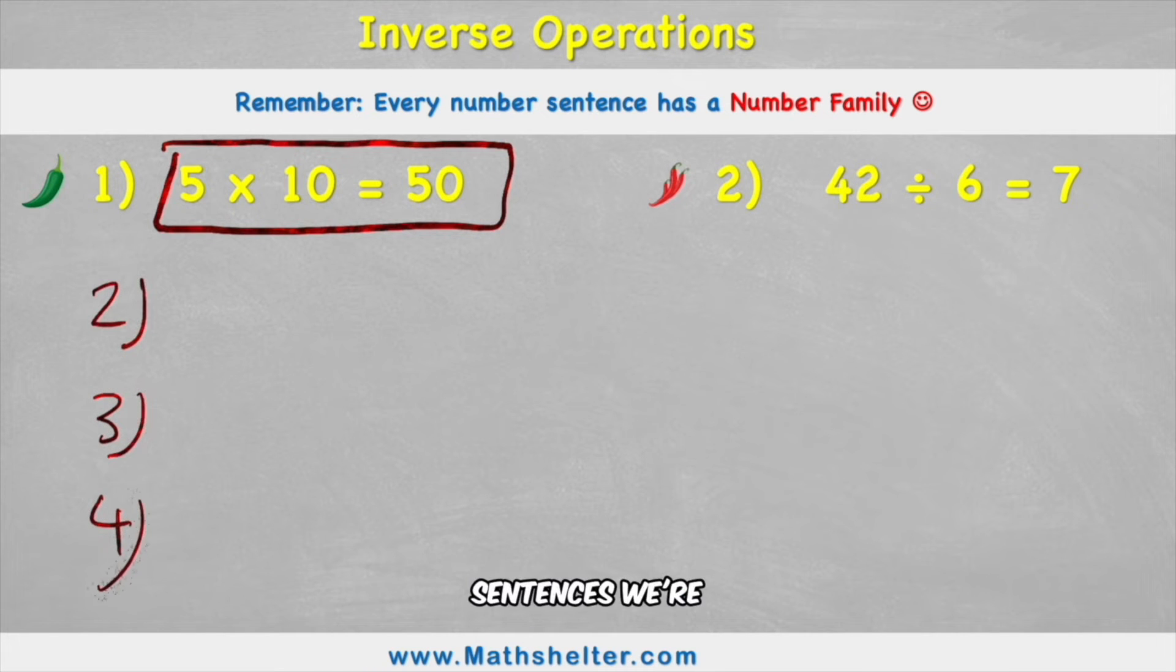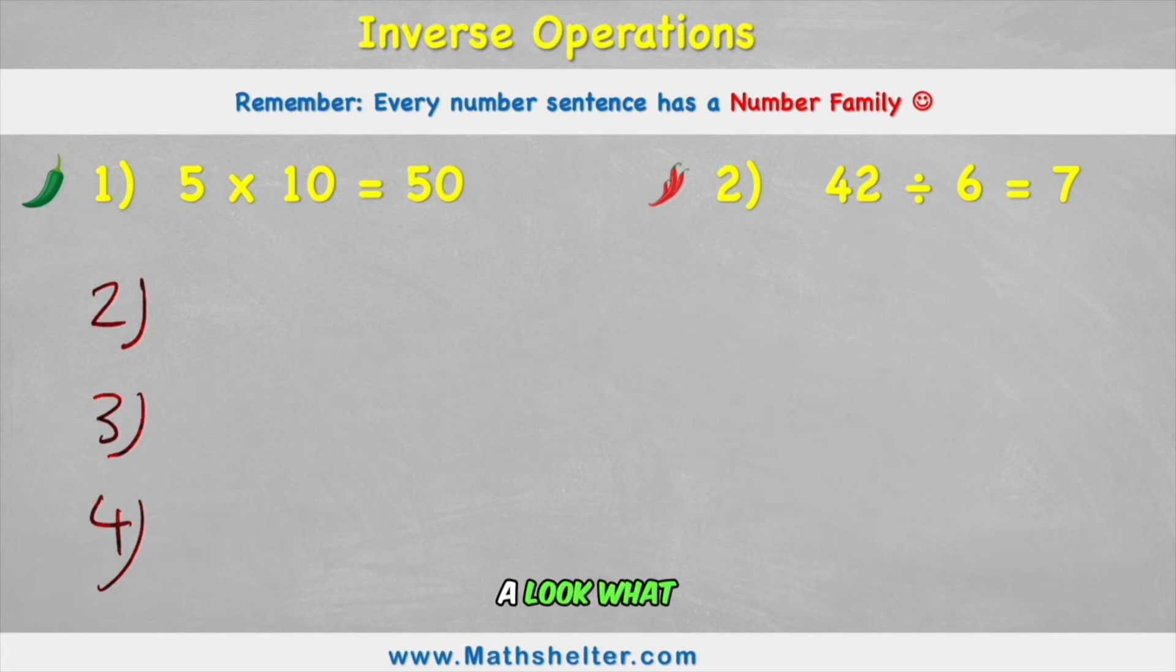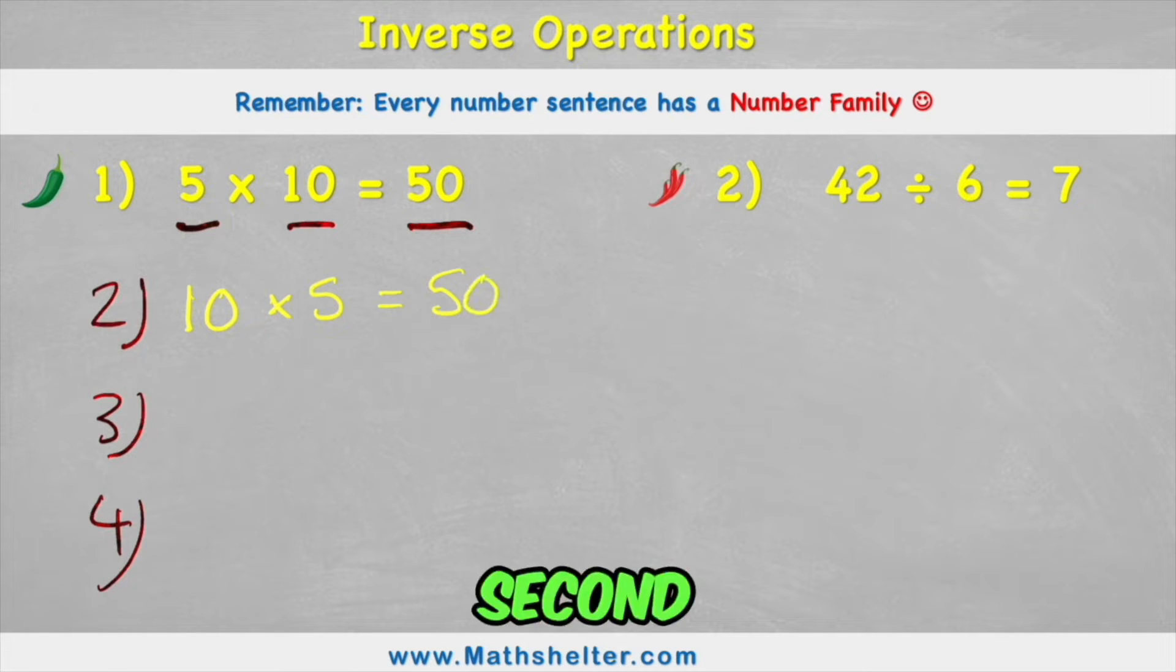And in these number sentences we're going to still use the same numbers, the 5, the 10 and the 50, but we can rearrange them in different ways to express that number sentence. So let's have a look what I mean. Well 5 times 10 equals 50, but also 10 times 5 equals 50. So this is our second number sentence in the number family.